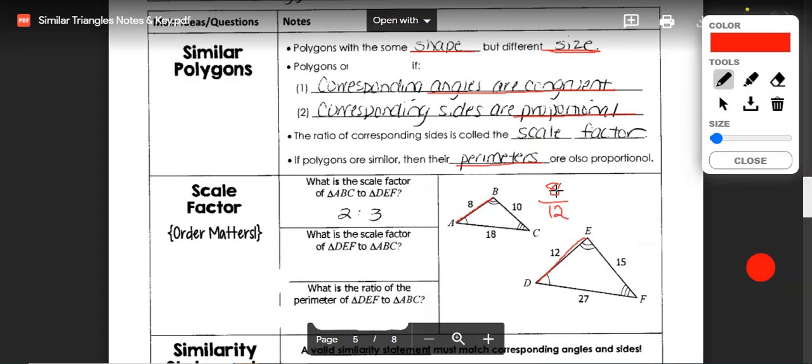8 divided by 12 simplifies to 2 thirds. So the scale factor is 2 thirds or 2 to 3.